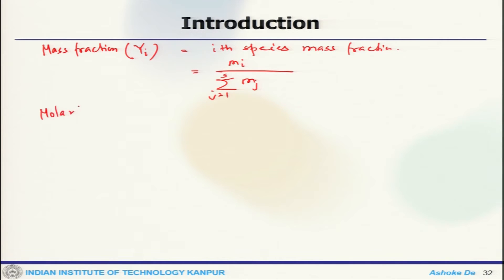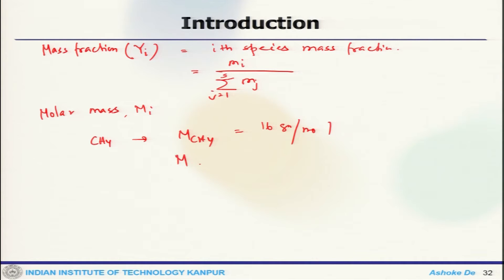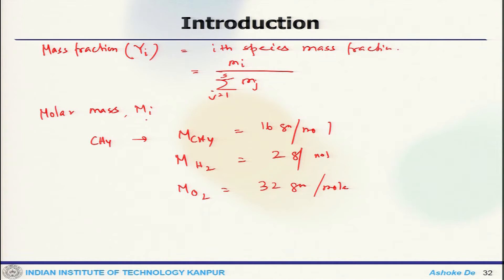One can define the molar mass, M_i. For example, the molar mass of CH₄ is 16 g/mol; the molar mass of H₂ is 2 g/mol; and the molar mass of O₂ is 32 g/mol. The molar mass for a particular species is represented as M_i. One should not get confused with molecular weight here — the molar mass is a distinct quantity.